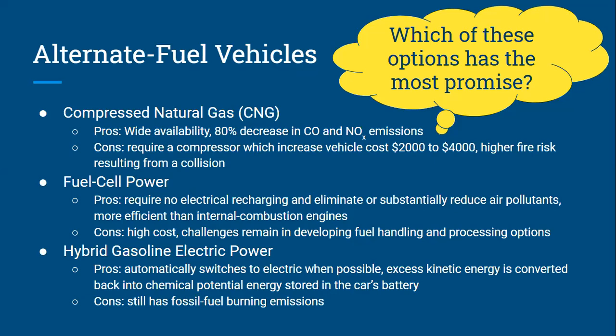There are three types of alternative fuel vehicles mentioned in your book. First is compressed natural gas (CNG). Pros: it's widely available and there's an 80% decrease in carbon monoxide and nitrogen oxide emissions. Cons: it requires a compressor in the vehicle, which makes the vehicle $2,000 to $4,000 more expensive, and that fuel source also creates a higher fire risk resulting from a collision.